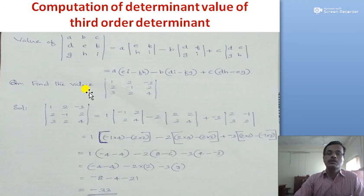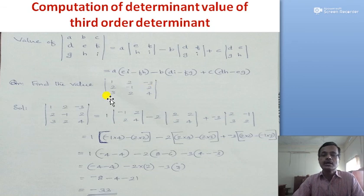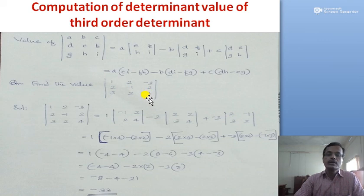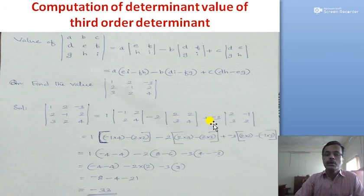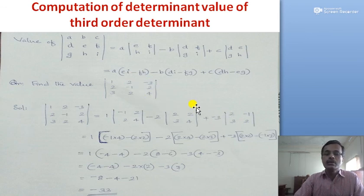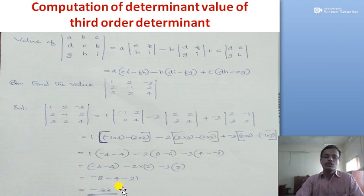Let us compute the value of the determinant [1, 2, 3; 2, 3, 2; 1, 2, 4]. Expanding along the first row: 1×(3×4 − 2×2) minus 2×(2×4 − 2×1) plus 3×(2×2 − 3×1). Simplifying gives the determinant value of 3.